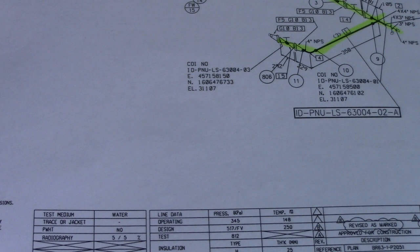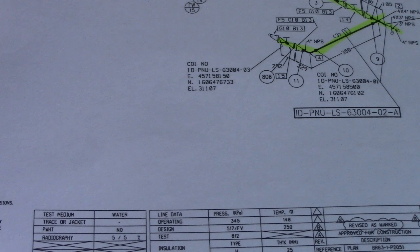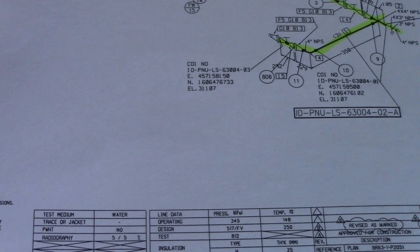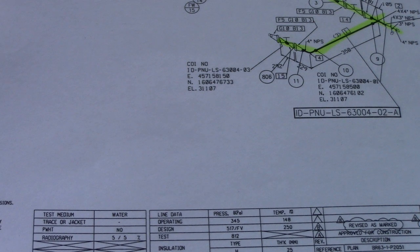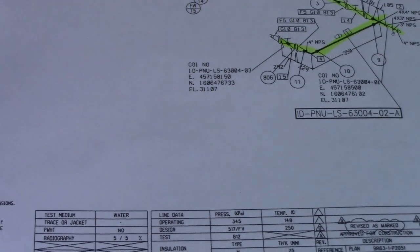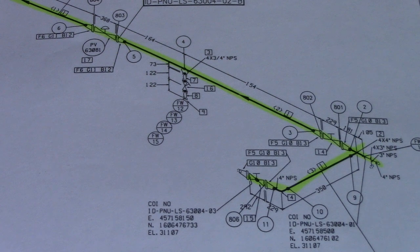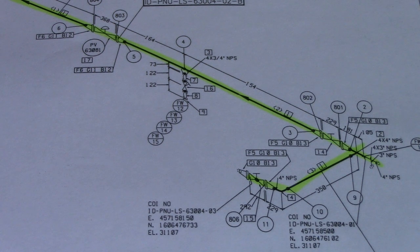Number eight is revision status. You can see the revision status below the line number, showing the revision and sheet number. Always check the revision status to see if our drawing is updated or not. Number nine is material class — what type of materials to be used on this line: what type of pipe, valves, and fittings.